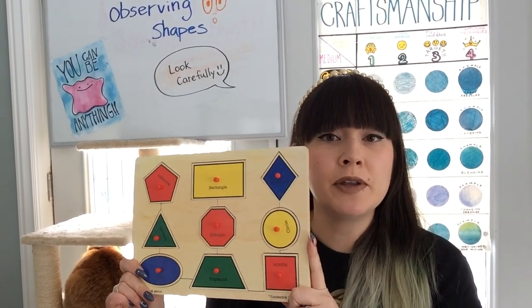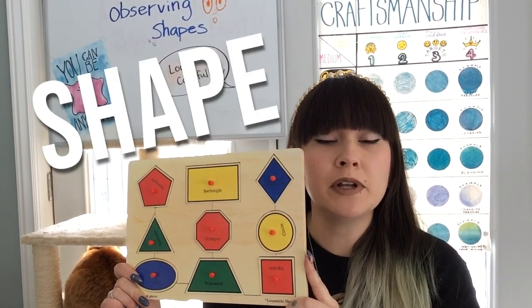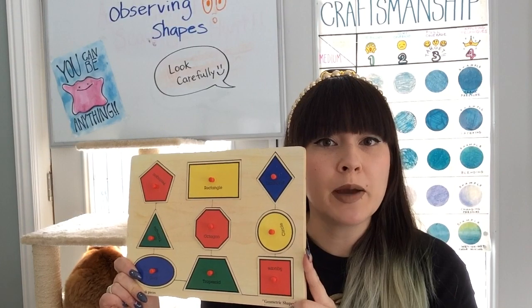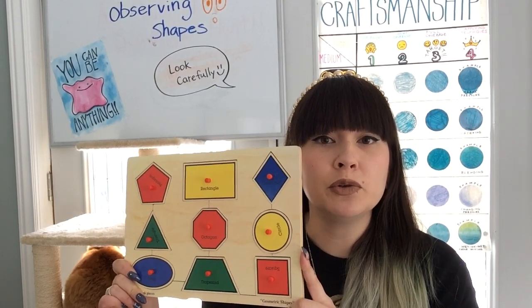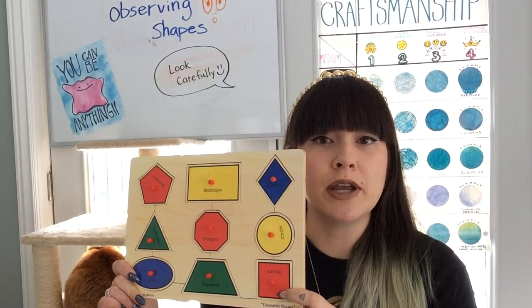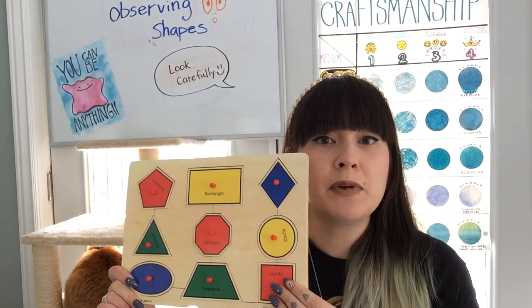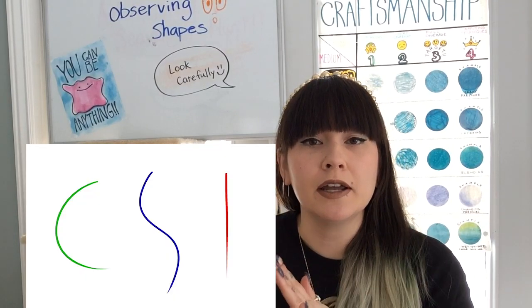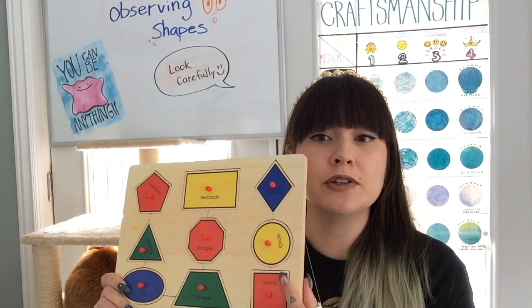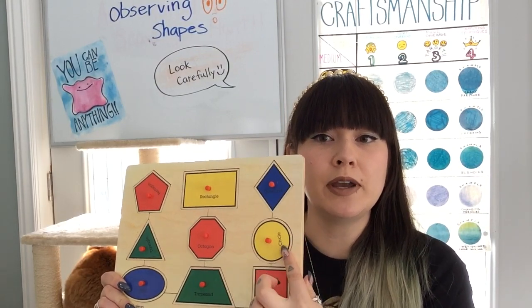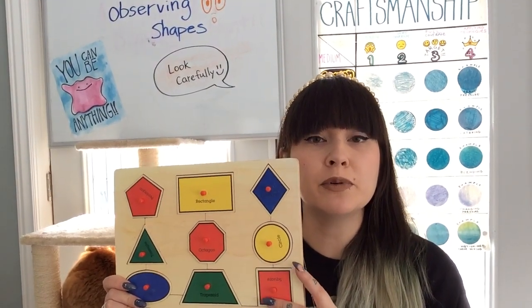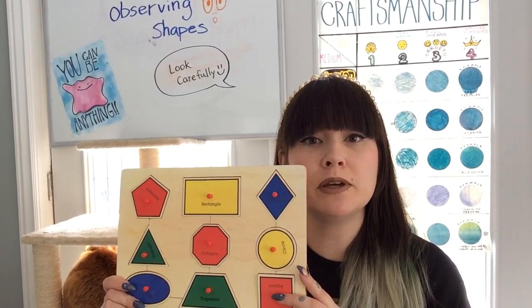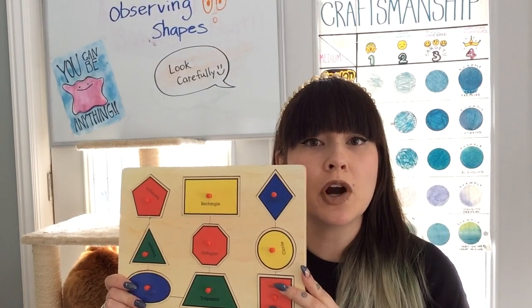Now let's review the element of shape, which is one of the elements of art — the little parts that make up an artwork. Lines have a beginning and an end, and shapes are closed. If it's open, it's a line; if it's closed, it is a shape. The reason I'm combining the idea of observing and the element of shape for this lesson is because it is very important to observe shapes in order to draw accurately.